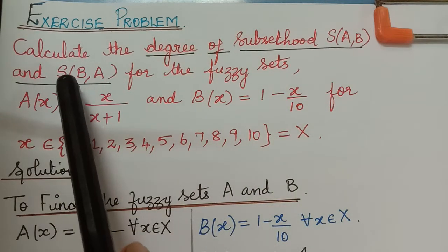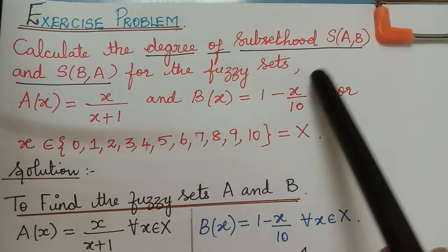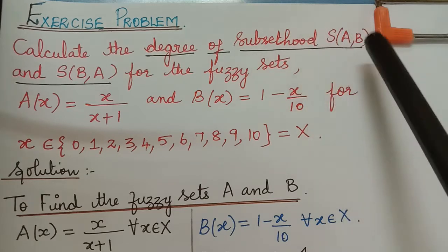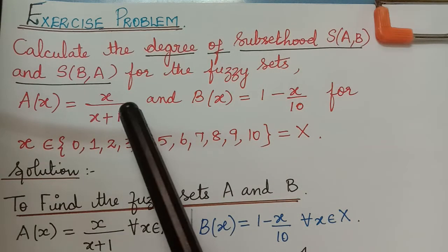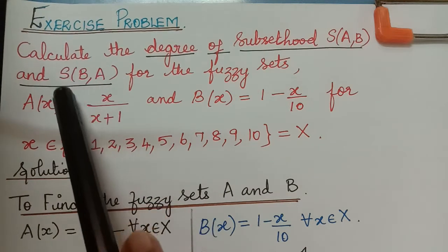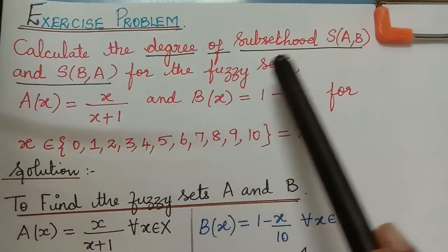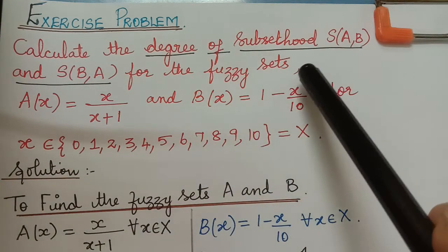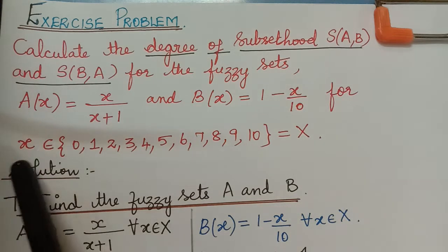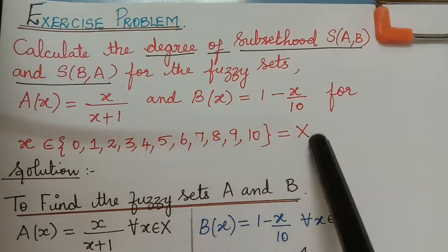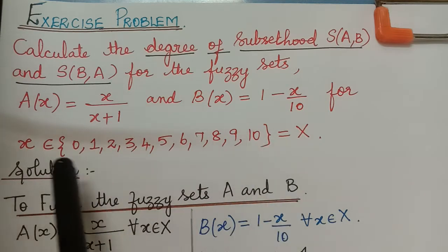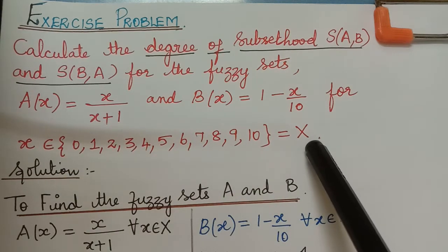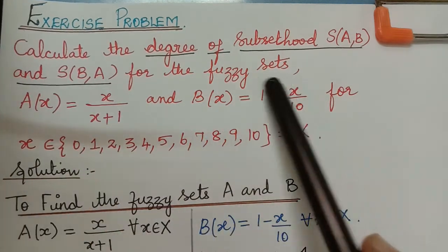The question is: calculate the degree of subsethood S(A, B), that is the degree of subsethood of A in B, and S(B, A), which means the degree of subsethood of B in A, for the fuzzy sets A(x) = x/(x+1) and B(x) = 1 - x/10, for x an element of the universal set X where the elements are from 0 to 10. They have given us a universal set and the functions for the fuzzy sets.